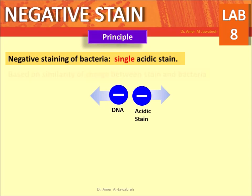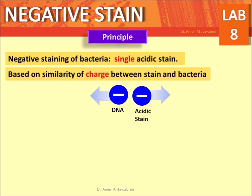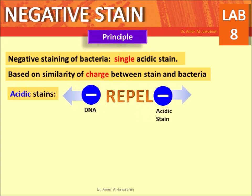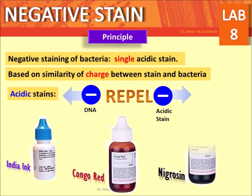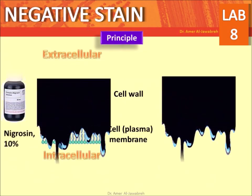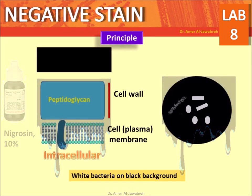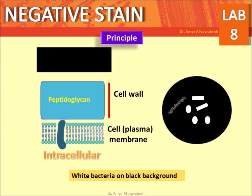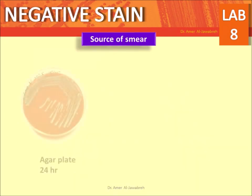Principle: negative staining of bacteria uses a single acidic stain. Based on similarity of charge, acidic stains and negatively charged bacteria both carry negative charge and therefore repel each other. Strongly acidic stains include India ink, Congo red, and nigrosine. A 10% nigrosine solution is added; nigrosine and bacteria repel due to negative charge, so nigrosine does not penetrate the bacteria — it stains the background black, leaving bacteria colorless.